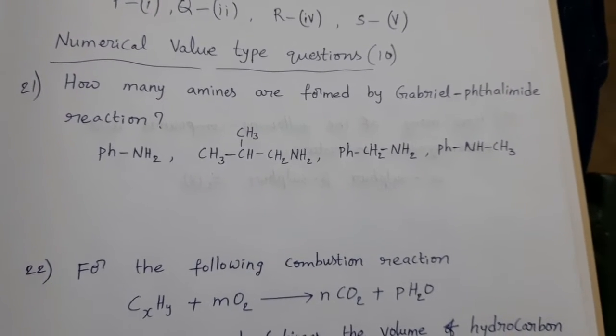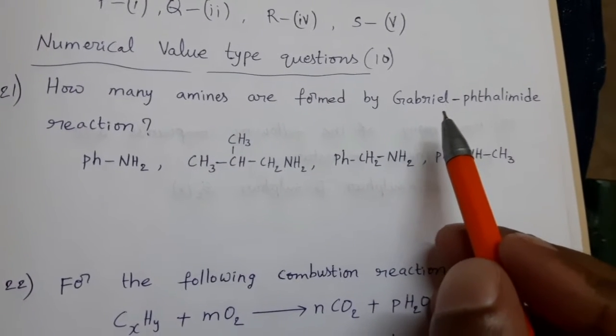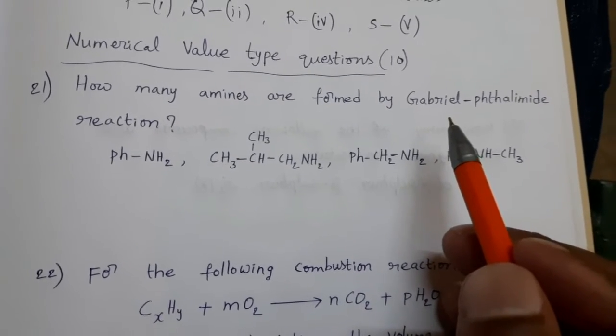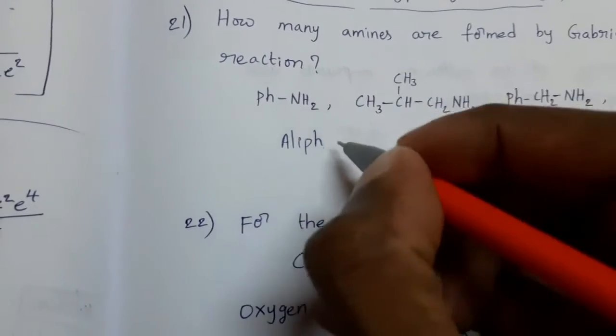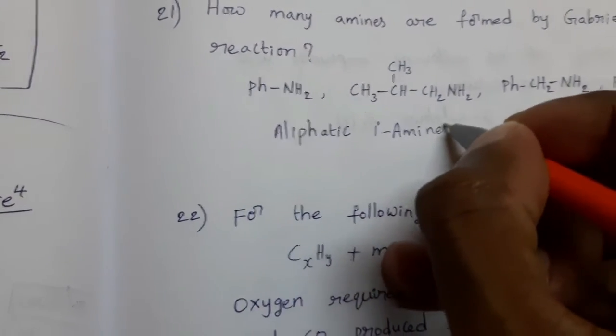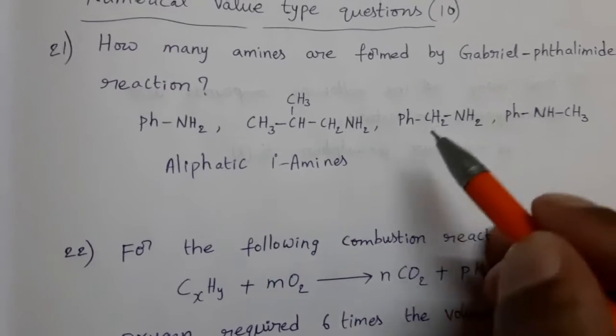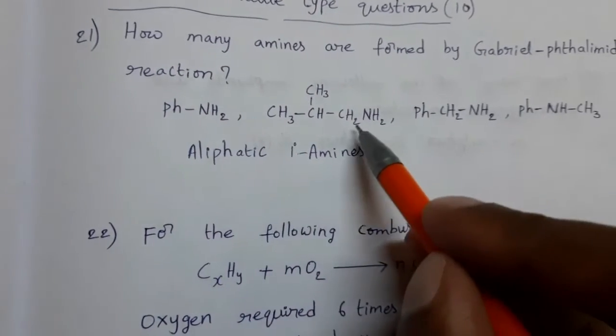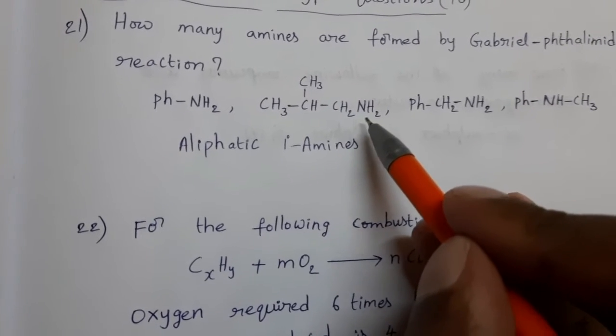how many compounds we can prepare by using this Gabriel phthalimide reaction? For this very simple answer, we no need of writing equation to prepare these amines. For this answer is, this Gabriel phthalimide reaction is suitable for the preparation of aliphatic primary amines.